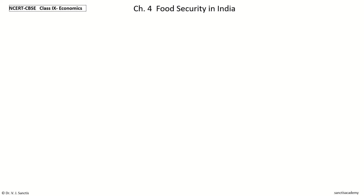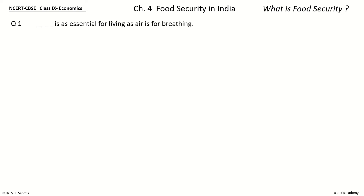Hi, welcome to NCERT CBSE Class 9 Economics Chapter 4: Food Security in India. In this video we will learn every point in the section 'What is Food Security?' This comprises 20 questions. Question 1: Dash is as essential for living as air is for breathing.